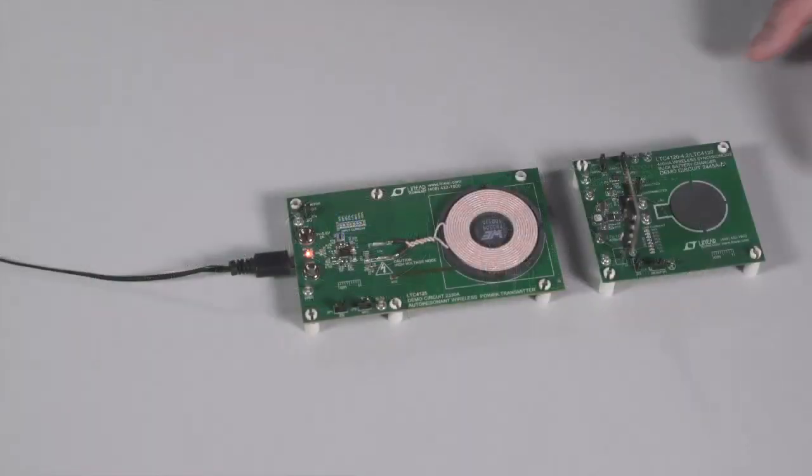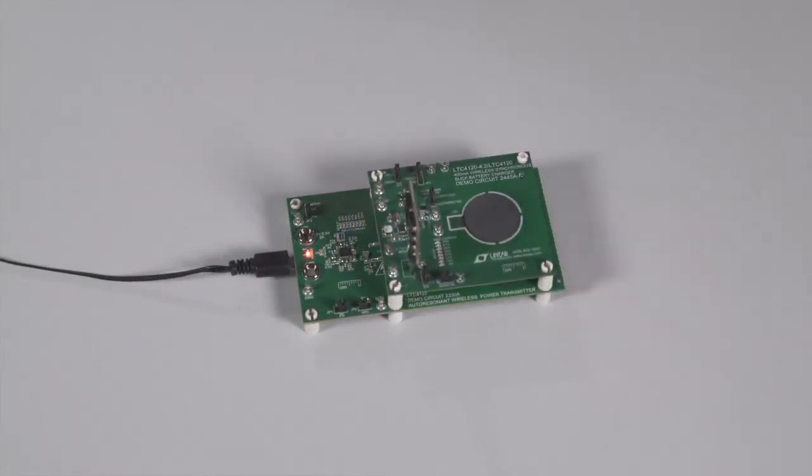When an LTC4120 receiver board is placed on top of it, you can see that during the next sweep, the LTC4125 detects a valid receiver and maintains the transmit power necessary for the full charge current.